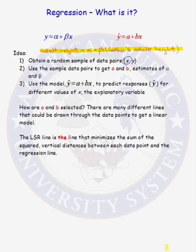Now the question arises: how do we use our sample pairs x and y to find a and b? There are many different lines that could be drawn through the data points to get a linear model. The least squared regression line is the line that minimizes the sum of the squared vertical distances between each data point and the regression line.